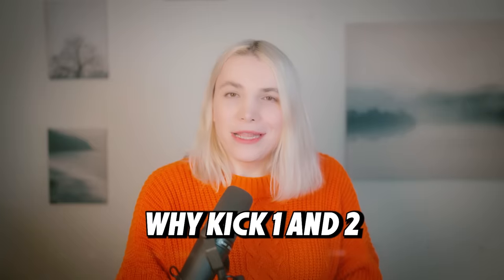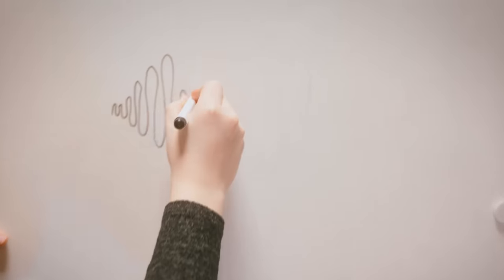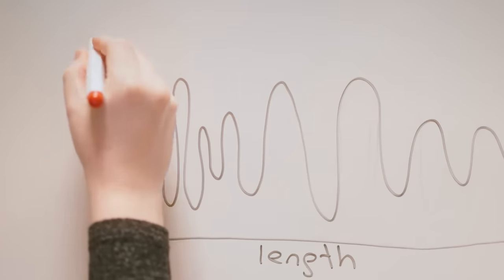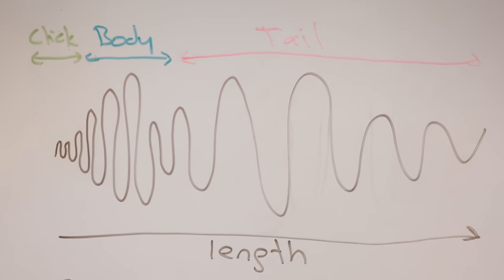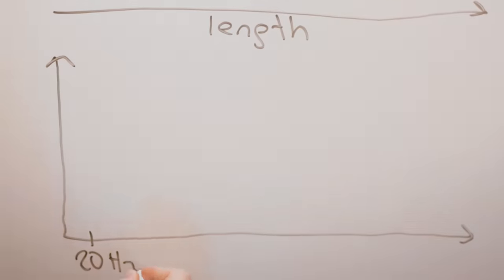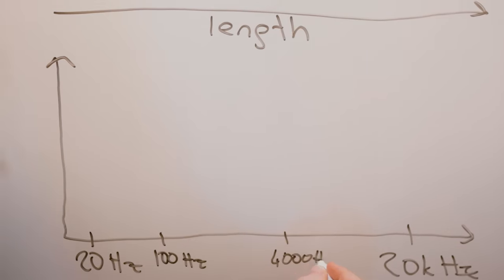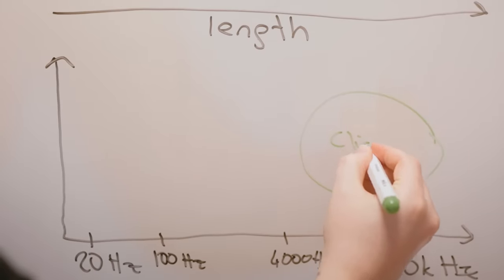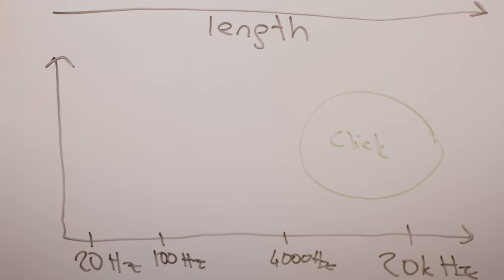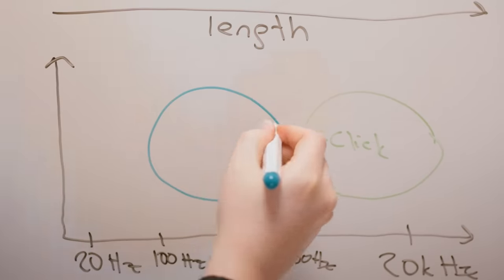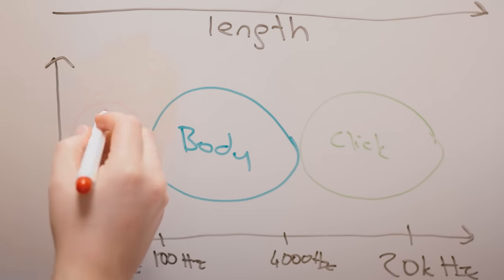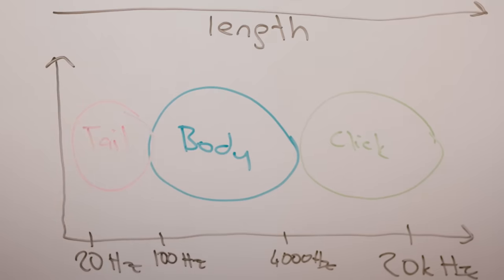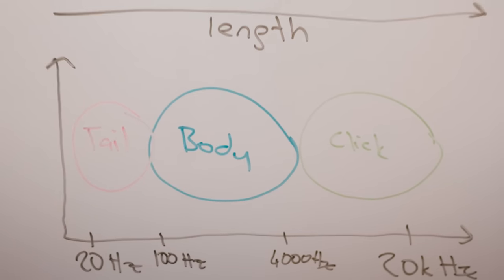That's why kicks one and two felt like they failed. Let me explain. A kick has three parts: an initial click, followed by a body, and finally a long tail. On a frequency chart, the division is even more obvious. The click sits very high on the spectrum and is used to cut through the mix. The body gives the character of the kick — it can be thumpy, aggressive, smooth, or hollow.